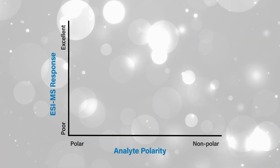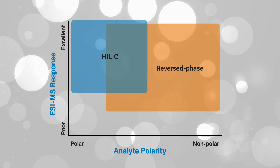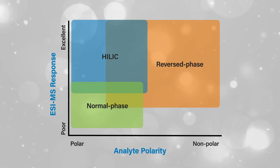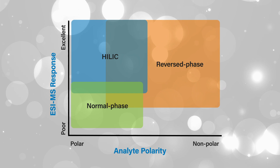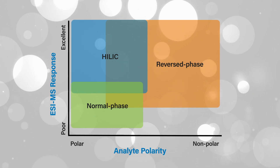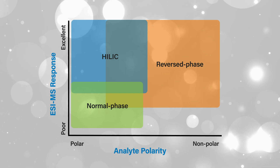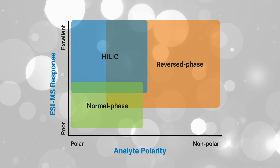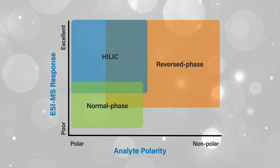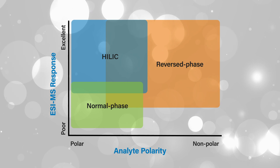The chart shown here highlights where HILIC fits in when compared to reverse phase and normal phase chromatography. HILIC works best when there is a need to increase the retention of hydrophilic or ionizable compounds. Also, since HILIC mobile phases often contain greater than 80% organic solvent, HILIC is very beneficial when improved electrospray ionization mass spec response is required for these polar analytes.